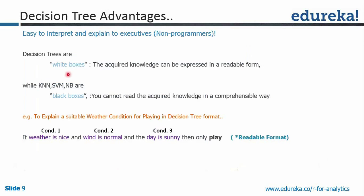Decision trees are white boxes — the acquired knowledge can be expressed in a readable form. When you run the decision tree model, everything is clearly visible. The other models are black boxes — you won't be able to read what's happening internally. In a decision tree, you have readable rules such as 'if weather is nice and wind is normal and the day is sunny, then go play.' That's a very easy-to-read format — that's the good part about decision tree.